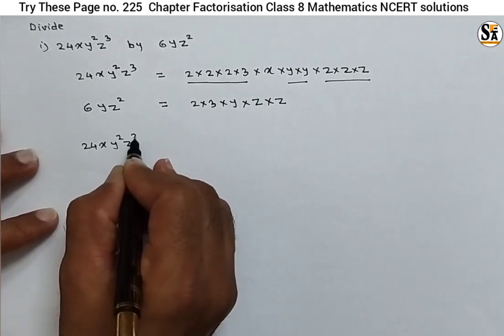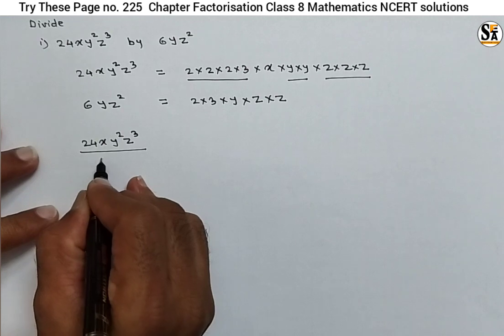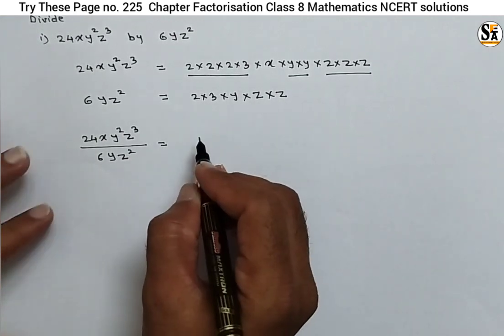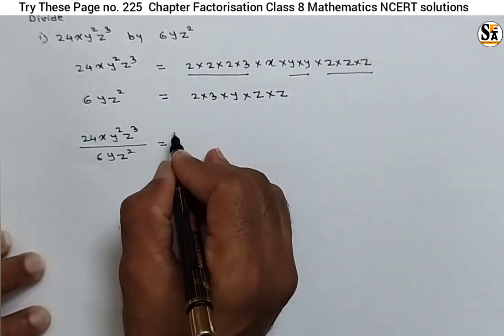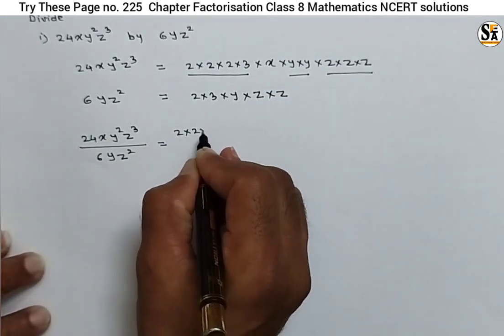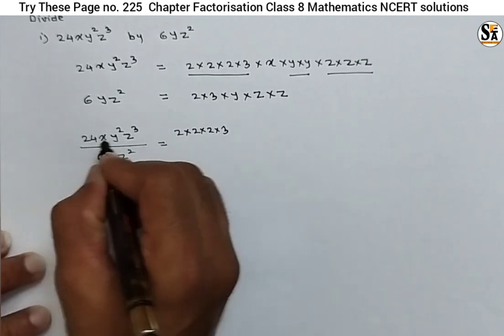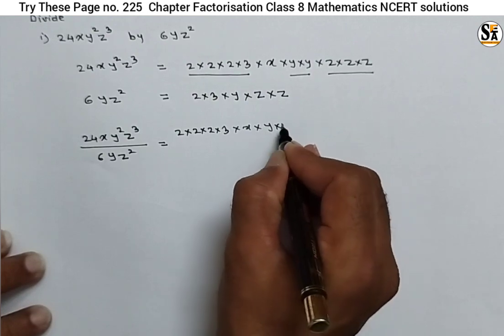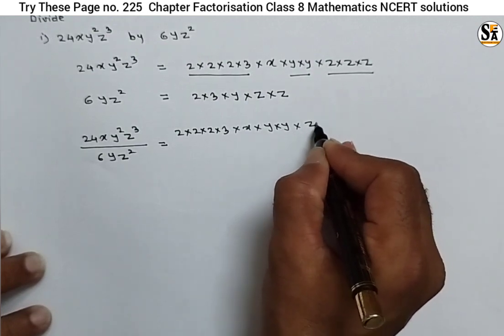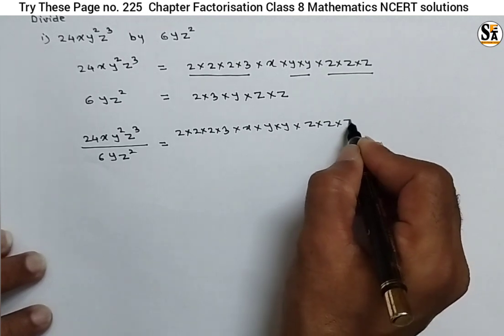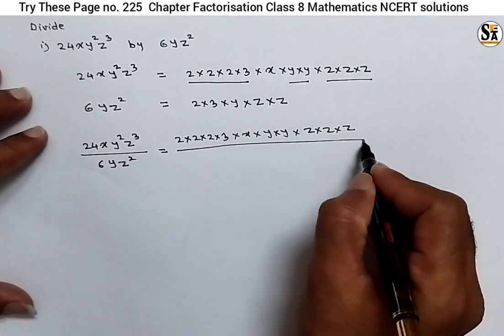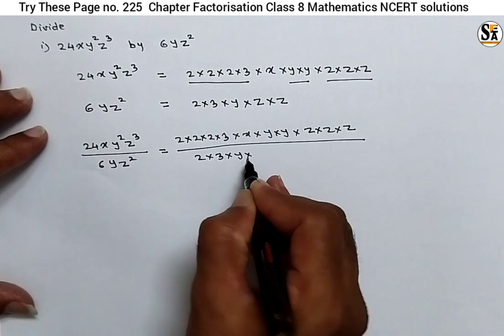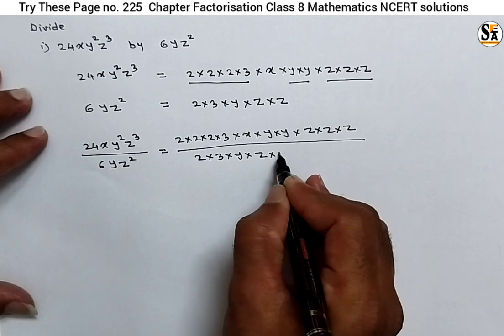Now take the division: 24x·y²·z³ divided by 6·y·z² is equal to — write the final factors of these expressions: the factors of 24 are 2×2×2×3, then x, then the factors of y² as y×y, and the factors of z³ as z×z×z. Divide by the factors of the denominator: 2×3×y×z.